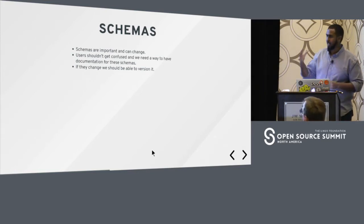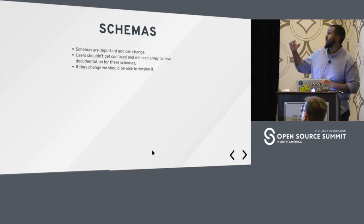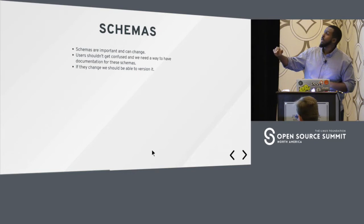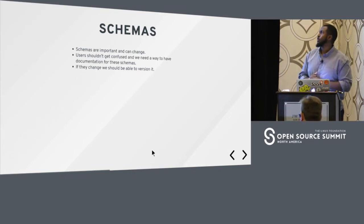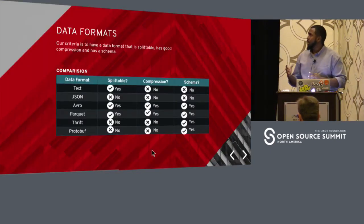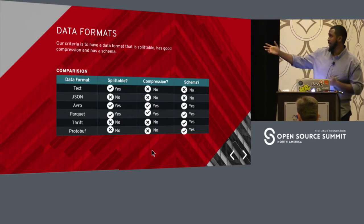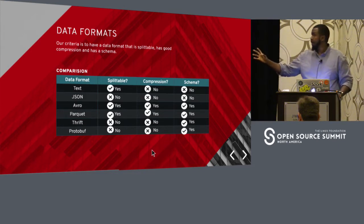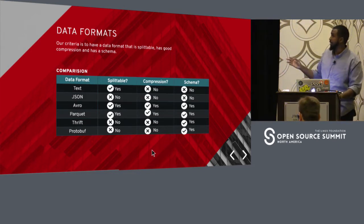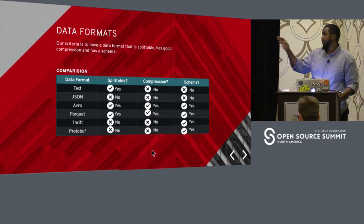So it's very important to have schemas, have them versioned, and have them documented. Let's look at what types of different data formats there are. There's text, JSON, Avro, Parquet, Thrift, and Protobuf — all have their own advantages and disadvantages. I've highlighted with a check mark and an X which ones have certain features.